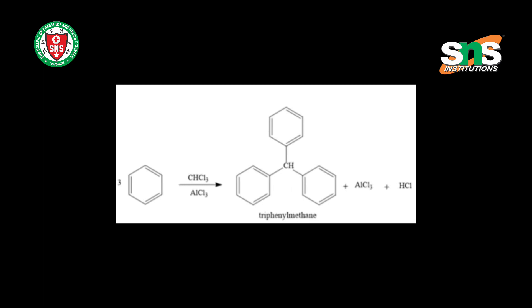Tri-phenyl methane is a colorless solid which is soluble only in non-polar organic solvents but is not soluble in water. The basic skeleton of tri-phenyl methane is used in many synthetic dyes, called tri-phenyl methane dyes. These dyes are commonly used as pH indicators, and some of them display fluorescence.